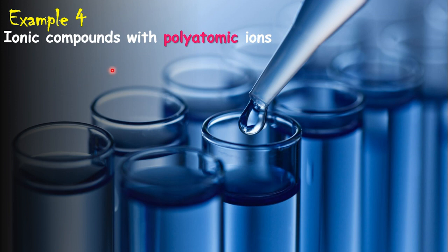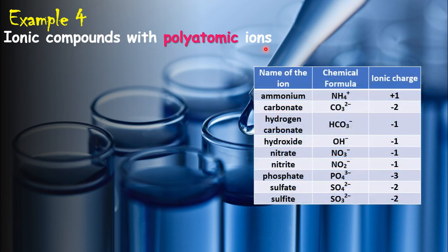Now consider ionic compounds containing polyatomic ions. A polyatomic ion is composed of two or more atoms and has an overall charge. Here is a list of common polyatomic ions you will need to know — you should keep memorizing these.